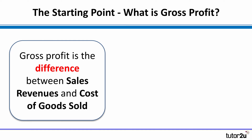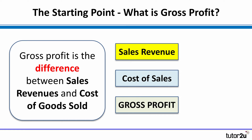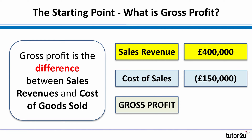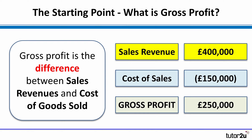So it's not all the costs of the business — it's just the costs directly relating to those sales revenues. For example, if we had sales revenues of £400,000 and the cost of those sales was £150,000, then the gross profit is simply the difference between sales revenue and cost of sales. So £400,000 less £150,000 gives us a gross profit of £250,000.